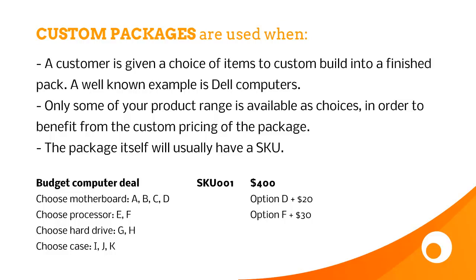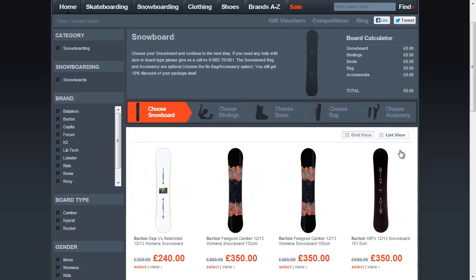A typical example of a custom package builder is a computer where a customer can choose a motherboard, processor, hard drive, and case. Once all these products are combined, there's a fixed price — for example $400 — with some options costing a little more. We're including custom packages here because inventory management is essential: when somebody buys the package, the stock of the different components needs to be updated or allocated properly. When you connect your e-commerce channel to Brightpearl, you need to make sure this is done correctly. A real-world example is a snowboard package builder where the user chooses a snowboard, bindings, boots, bag, and optional accessories.